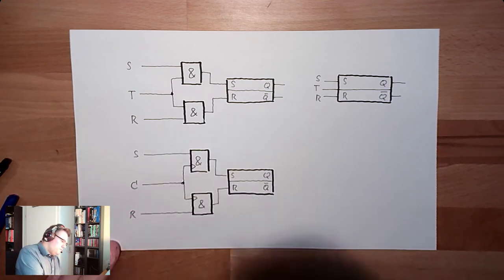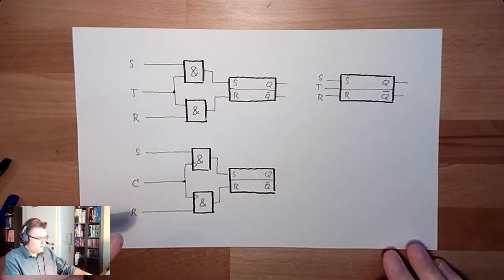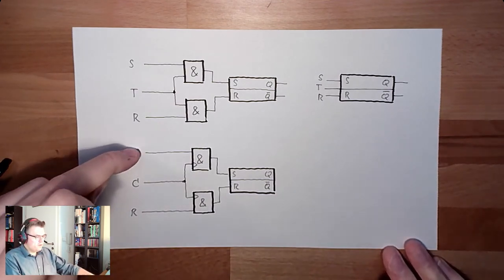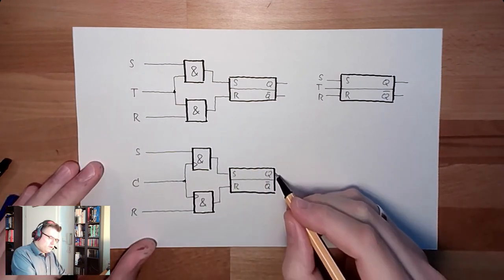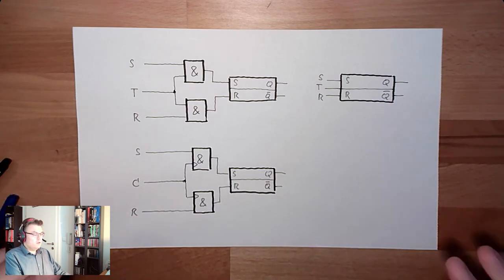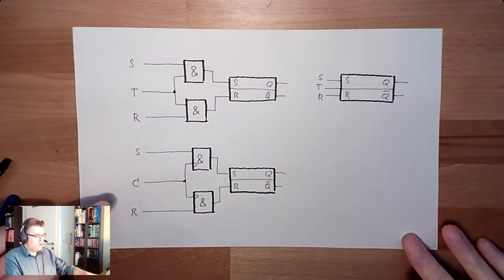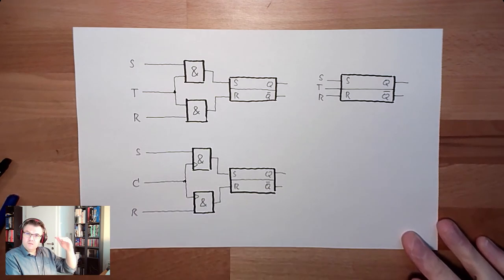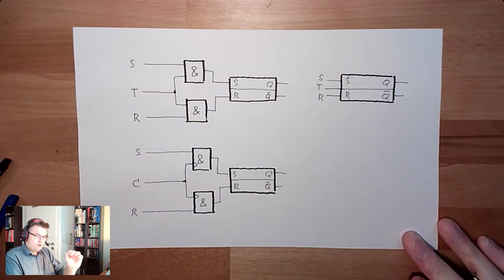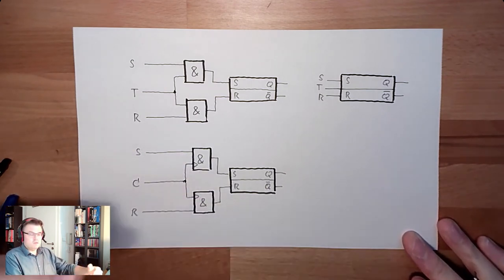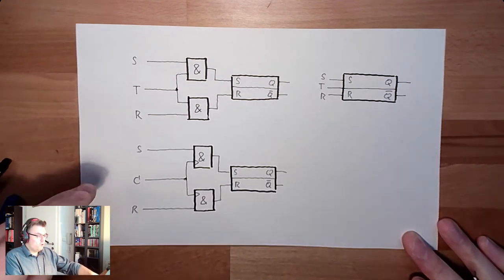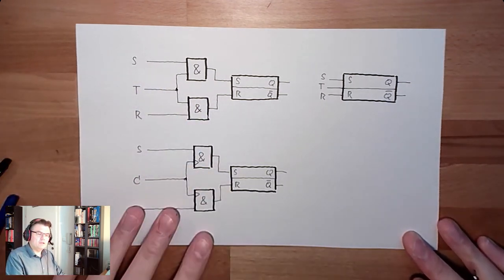Here this is the clock input. Only if the clock input is changing from 0 to 1, exactly at this moment, what is at S and R will be copied into the latch. Here we can exactly say at which position, how long C is staying at 1, it does not really matter. Exactly at the short period when C is changing from 0 to 1, we will take S and R and write it into the latch.